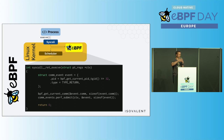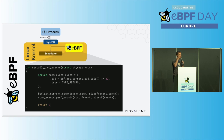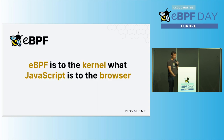If you run BCC, if you run Tracy, if you run Falco, they're using similar techniques to run a piece of code in the kernel to extract visibility. But that sounds very, very abstract.